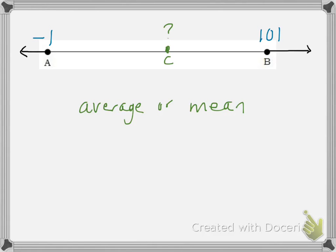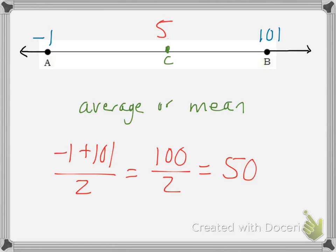We could find the mean between these two numbers and figure out where C is located. So, how do you figure out the mean? Well, you just add up the numbers and then divide by how many there are. So, let's do negative 1 plus 101 and divide by how many there are. That's 2. Negative 1 plus 101 is 100. 100 divided by 2 is 50. So, the number in the middle must be 50. That's a way we can find the middle number.